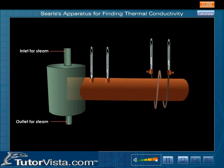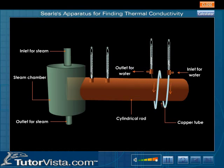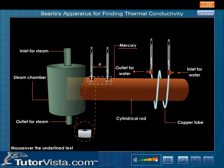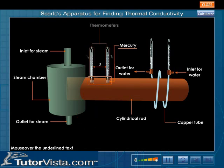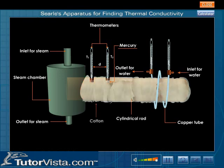One end of the rod is placed in a steam chamber, and a copper tube is wound on the other end. Water is made to flow through the coiled copper tube. There are two holes filled with mercury on the cylindrical rod, and two thermometers are placed in these holes. The whole apparatus is entirely covered with insulating material like cotton to prevent heat loss from the sides.